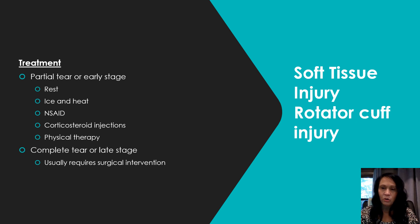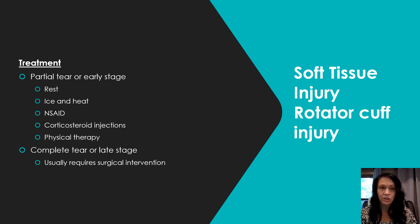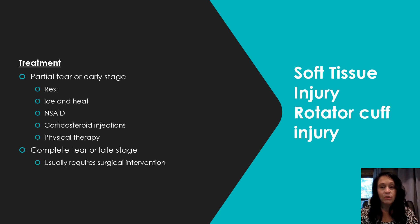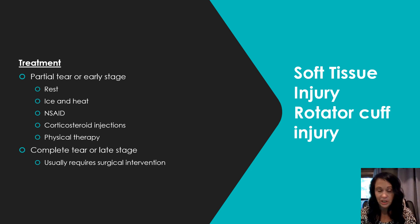For a partial tear or early stage rotator cuff injury, we rest it, do ice and heat alternating, provide NSAIDs if not contraindicated, corticosteroid injections, and physical therapy. A complete tear or late stage usually requires surgical intervention — those patients are in extreme pain. I had a suspected rotator cuff injury from kayaking; my physician recommended immobilization and it resolved without surgery.